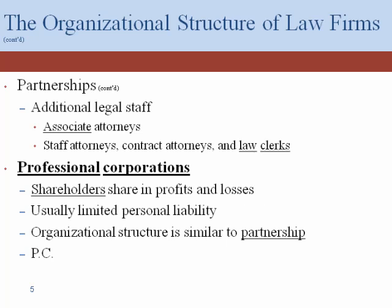There are a lot of factors that affect whether an associate becomes a partner. They're usually just called associates. One factor is economics — if a certain department is not making enough money to support all the partners it already has, no matter how awesome the associate is, it's very unlikely they'll make partner because the economics don't play out. It may be that the associate is given another year or two to be up for a vote again.